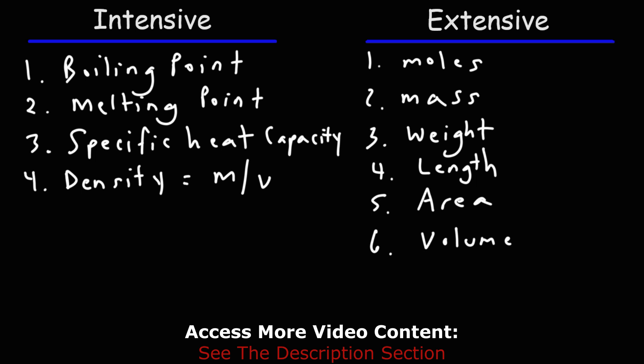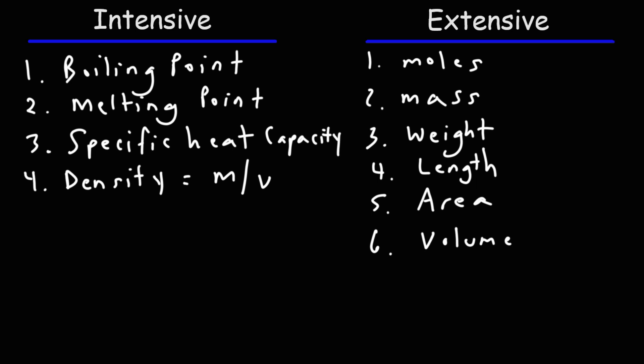The density of water, which is 1 gram per milliliter, is going to be the same regardless if you have 20 grams or 40 grams of water. So density doesn't depend on how much substance you have — it's an intensive property. Some intensive properties can be used to identify a substance. For instance, the density of aluminum is 2.7 grams per milliliter, or 2,700 kilograms per cubic meter. If a substance has this density, it's likely to be aluminum. The boiling point can also be used to identify a substance — if the boiling point is 100 degrees Celsius at sea level, where the atmospheric pressure is 1 atm, you're likely dealing with water.